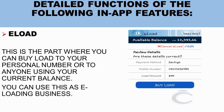Next is E-Load. This is where you can send load to your personal number or to anyone else — using your savings balance. Just enter the mobile number and the amount of load, then hit Buy Load. Confirm it by entering your password, and the transaction will be complete — you'll be loaded instantly. You can also use this as an e-loading business: for every 100 pesos loaded, only 100 pesos is deducted, so you can add a 1 to 3 peso markup each time someone buys load from you.